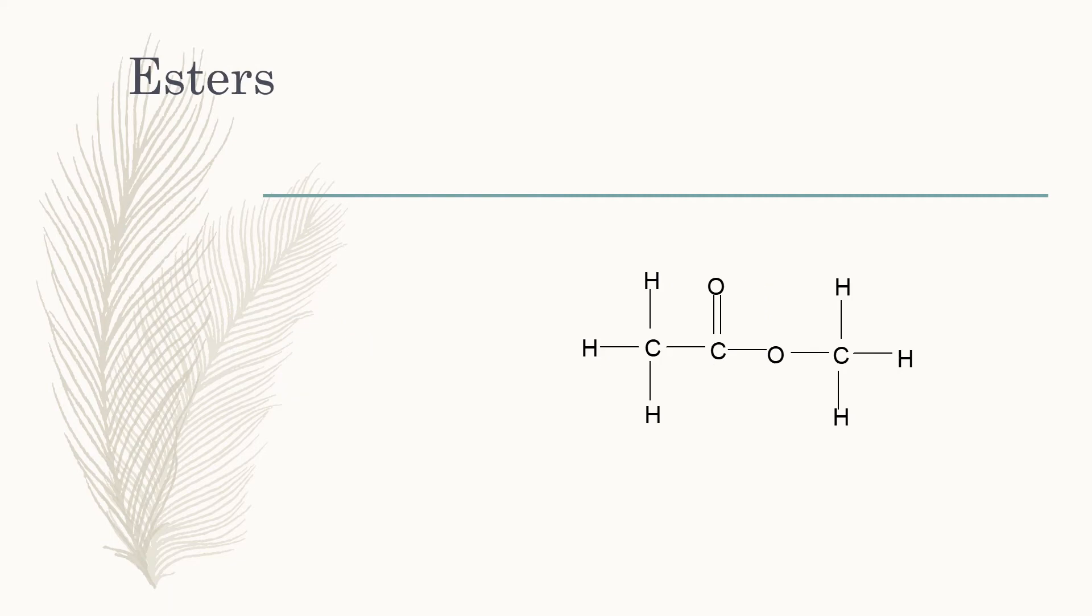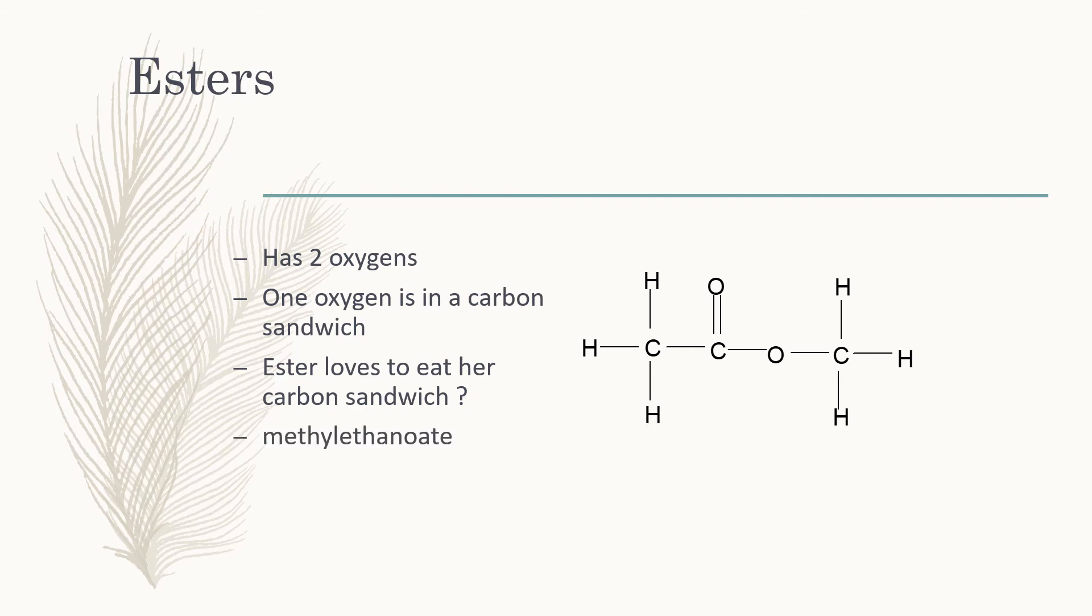Esters have a single bond and double bond oxygen, but they don't have a hydroxide group. Instead, in place of that hydrogen, they have another organic chain, so the oxygen is in a carbon sandwich. 'Ester loves to eat her carbon sandwich' is a way you can remember that - though it's not actually a very good mnemonic. This one is called methyl ethanoate because it has a meth group on the right and eth group on the left. 'oate' is the ending that means ester.